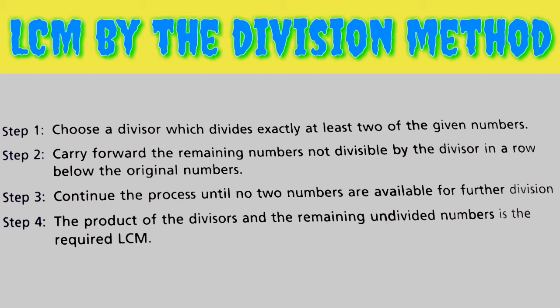Step 3: Continue the process until no two numbers are available for further division. Step 4: The product of the divisors and the remaining undivided numbers is the required LCM. Don't worry, I will define all the steps through an example.